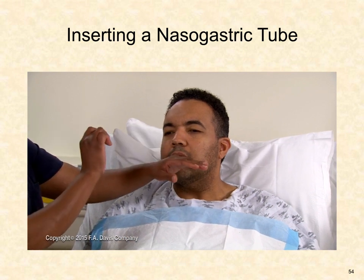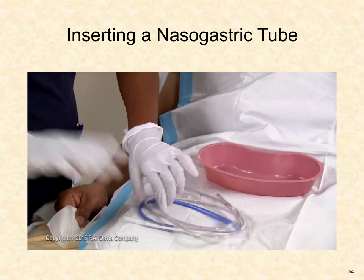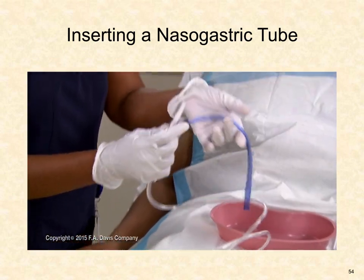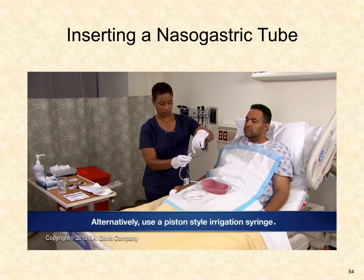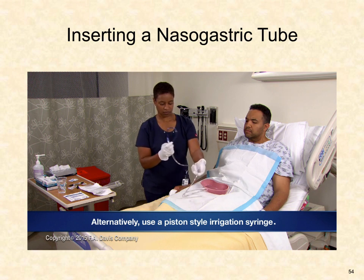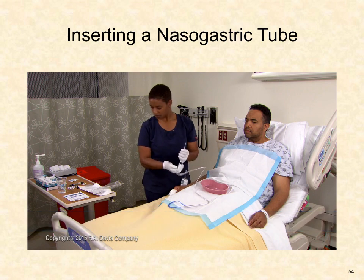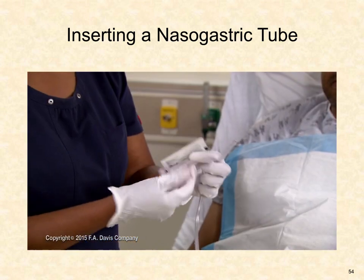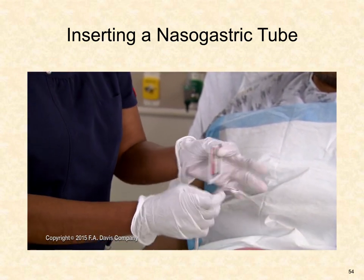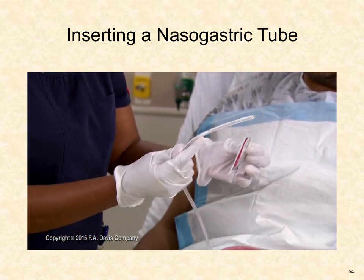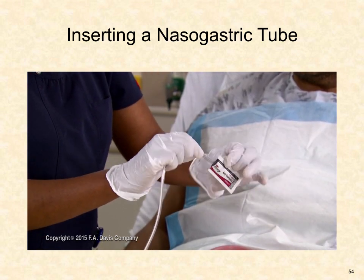Wearing clean examination gloves, plug the end of the NG tube before inserting it to prevent outflow when reaching the stomach. Alternatively, snugly insert a piston-style irrigation syringe into the open end of the tube to later check placement. Lubricate 3–4 inches of the tip of the NG tube with a small amount of water-soluble lubricant. Avoid petroleum-based lubricants as they increase the risk of pneumonia due to inhaling petrolatum products.